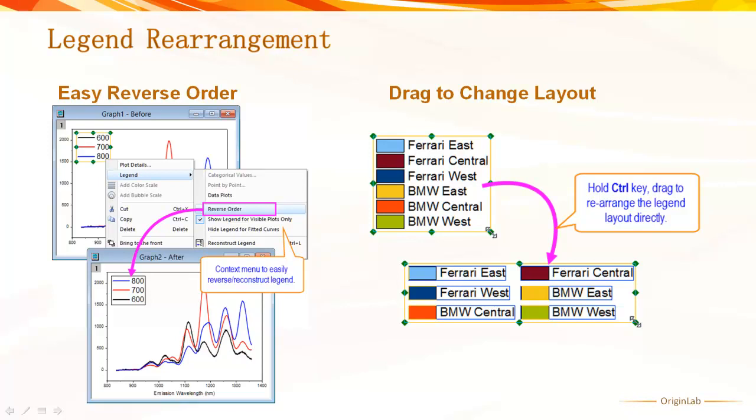It is much easier to rearrange the legend now. For example, you can right-click a legend object and use the Context menu to reverse the legend order. You can also hold down the Ctrl key and drag the legend object to rearrange it into multiple columns.